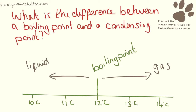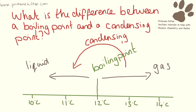But conversely, we can say that the point at which it turns from a gas to a liquid — its condensing point — is also 12 degrees C. Because this is the transition point. It is not as if it condenses at 11 degrees C and it boils at 13 degrees C. Both things happen at 12 degrees.